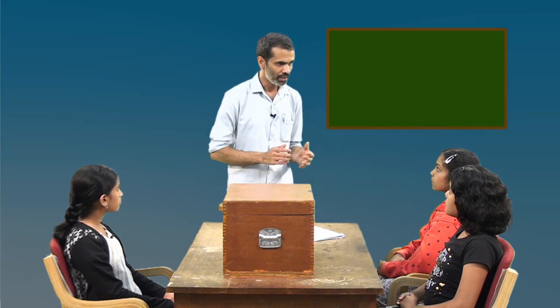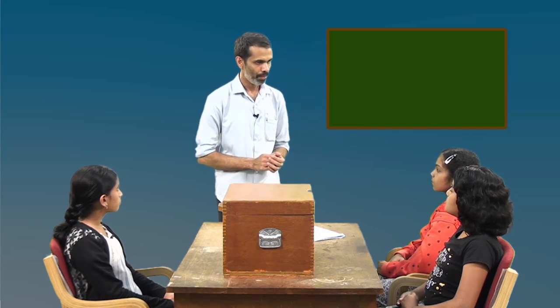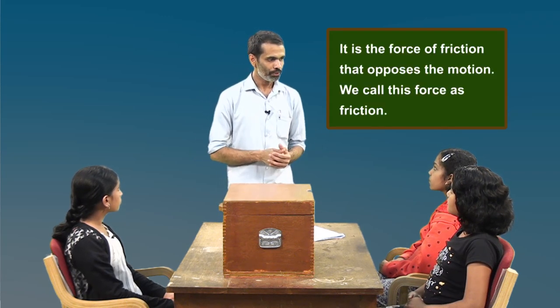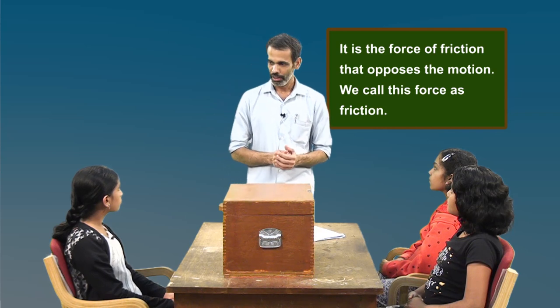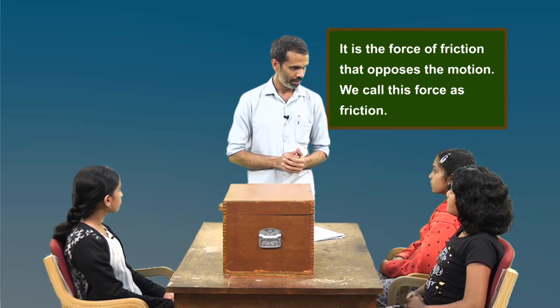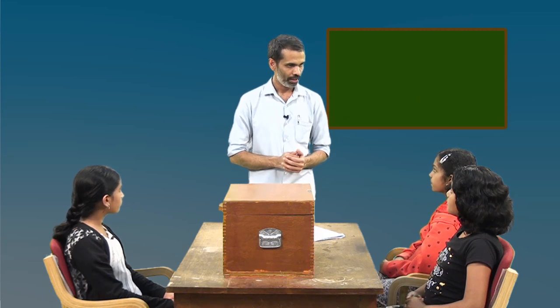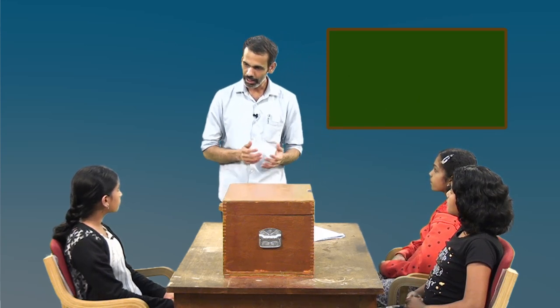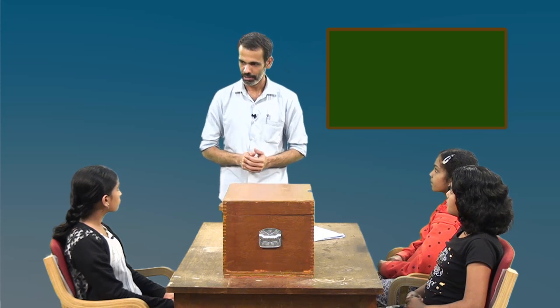What does this force do? I think it was opposing the motion of the object. That is exactly what it does. This force opposes the motion of these objects. We call this force as friction. In all life situations that we generally come across, friction is present.